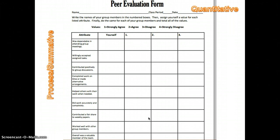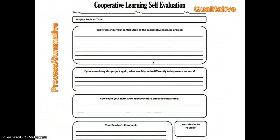Here's another peer evaluation form that's a little more detailed — for higher-level students or when you want them to dig deeper. This is still a process assessment but it's summative, so it happens at the end of the group work. It is quantitative, with students rating themselves 1 to 4. You can see attributes like: dependable, helped others when work was needed, did work accurately, contributed a fair share to weekly tasks, etc. You'll definitely want to go over these items with students so they rate themselves and each other fairly. There's also a cooperative learning self-evaluation that is summative and qualitative, where students reflect on their process throughout the project — though you could modify it to be formative as well.